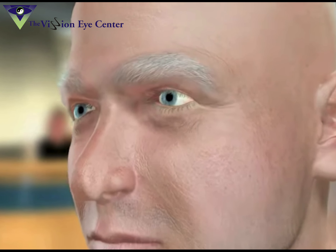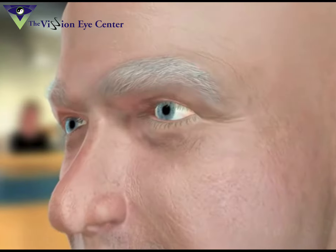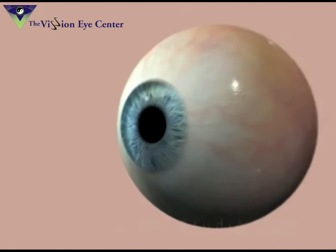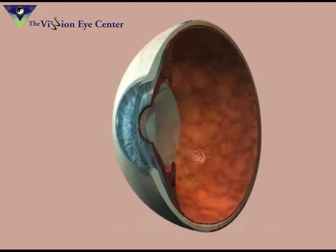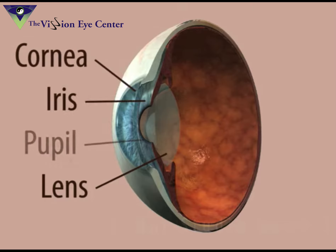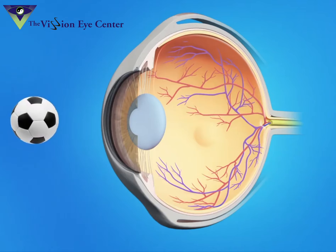Cataract surgery is a very common procedure. This is when your eye surgeon removes the natural cloudy lens from your eye and replaces it with an artificial lens. Normally, the eye lens is clear, allowing the rays of light to pass through and focus the image on the retina.